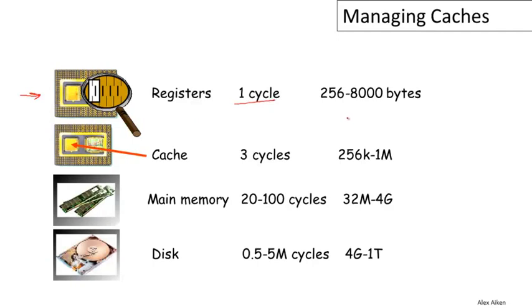The problem is that it's very expensive to build such high-performance memory, so we don't get to have very much of it typically. You might have 256 to 8K bytes of registers total available to you on a given processor.